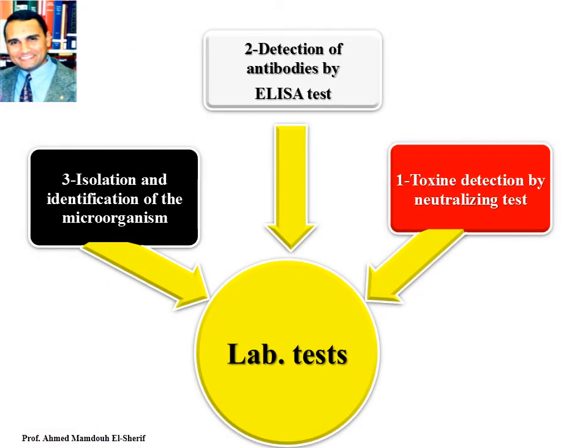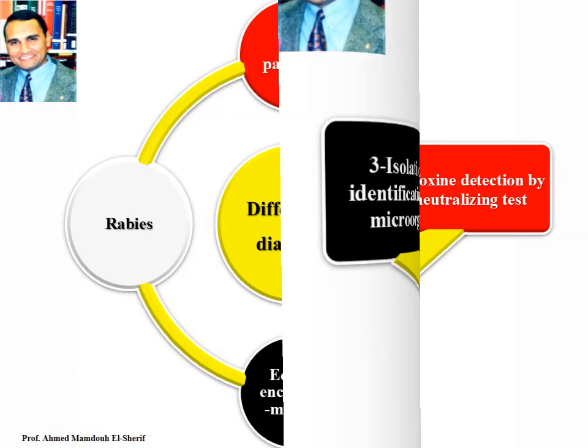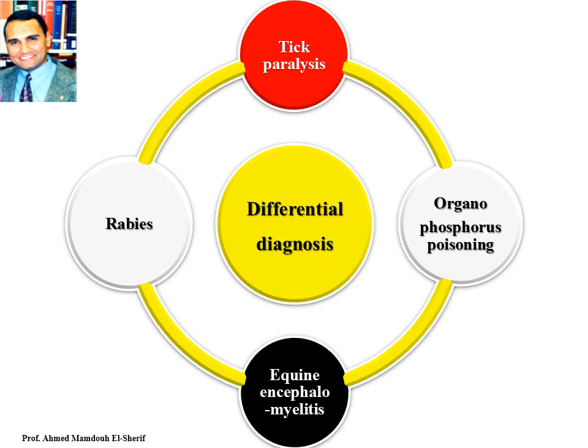Laboratory examination by: toxin detection via neutralizing test, detection of antibodies by ELISA test, and isolation and identification of the microorganism on a specific medium. Differential diagnosis of botulism includes: tick paralysis, organophosphorus poisoning, equine encephalomyelitis, and rabies.